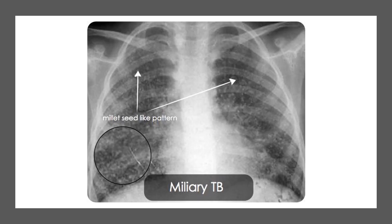Miliary tuberculosis looks like millet seeds — that's where the term comes from. On a chest x-ray, it looks almost like ground glass opacities similar to ARDS, but these are just little seeds spread throughout the lungs. It looks like seeds scattered all over the x-ray — the bacilli spread out affecting more than just the apices, consuming tissue all over the place.